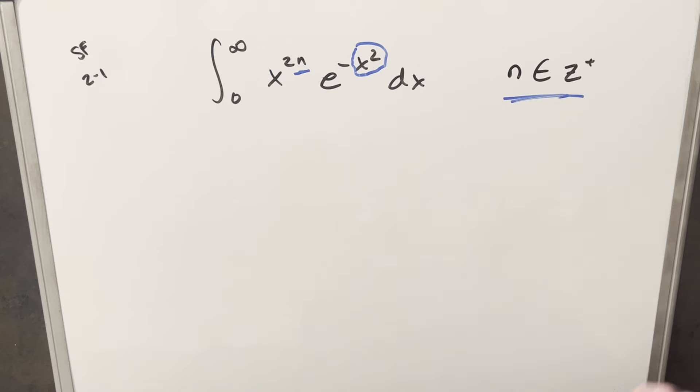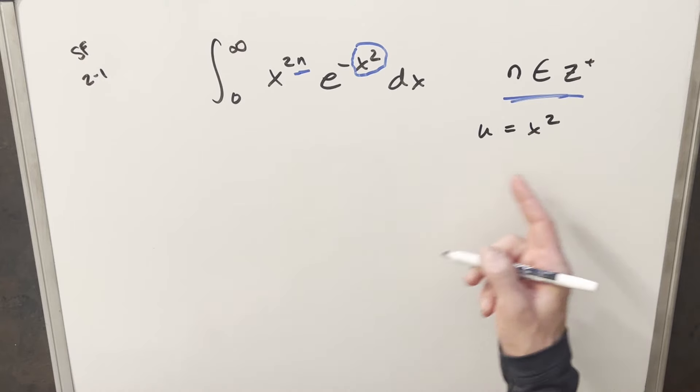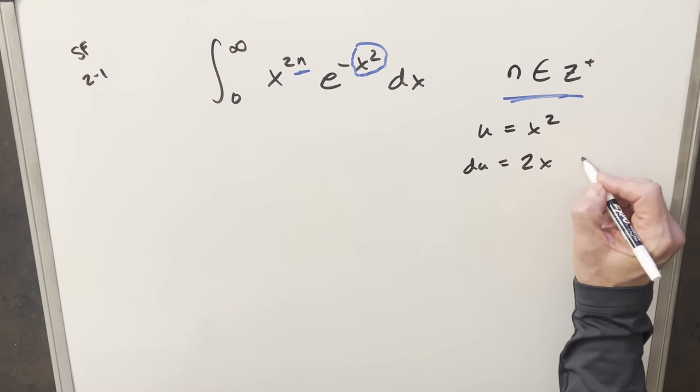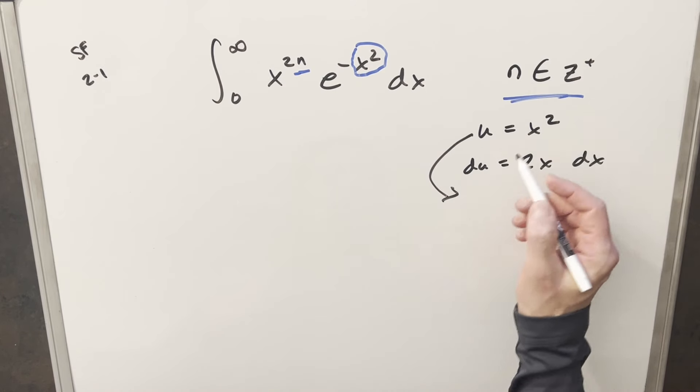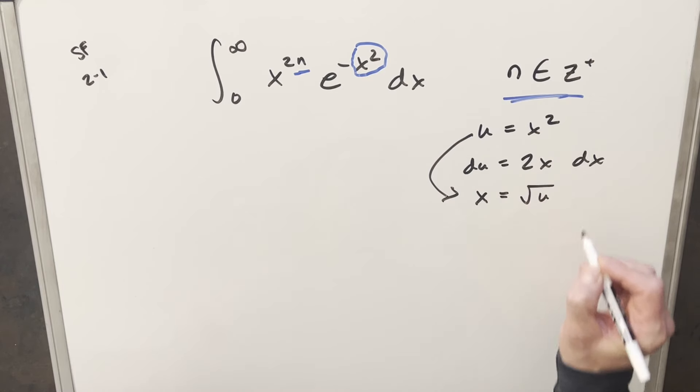So what I can do is try to deal with that with a u substitution. I'm just going to make my u equal to x squared. And then I'll go ahead, we'll get a derivative. So du is going to be just 2x dx. And also I think it might be useful to just solve for x. So we'll just take square root of both sides here and we'll find that x is going to be equal to square root of u.